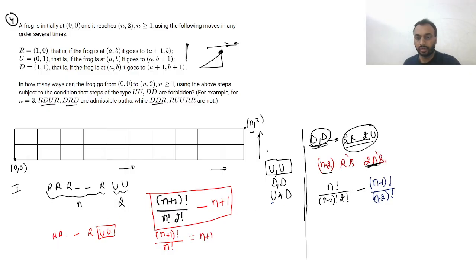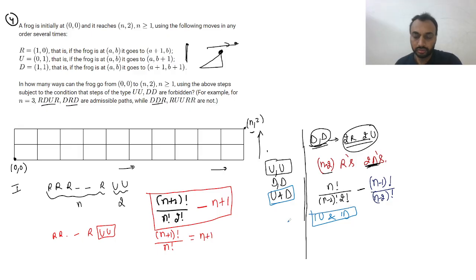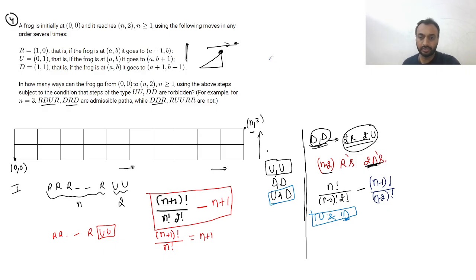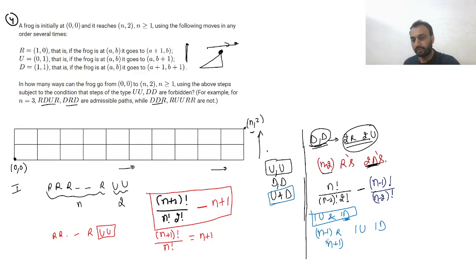Case 3: using one U and one D. There is no restriction here since U and D can come together. One D covers one unit to the right, so we need n−1 R steps. We have n−1 R's, one U, and one D. The number of arrangements is (n+1)! / (n−1)!.